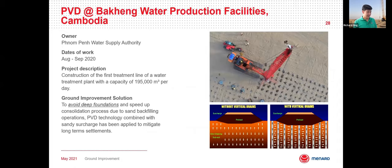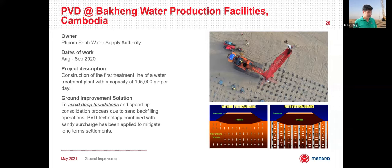The first case study is a project completed in Cambodia last year — the construction of the first treatment line of a water treatment plant, using ground improvement with prefabricated vertical drains. By installing these vertical drains, we can accelerate the consolidation of the soil and omit the use of deep foundations, ensuring most settlement occurs during construction. It is a very cheap but very effective method when designed and constructed properly.